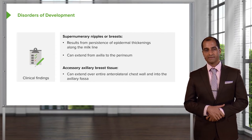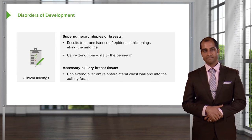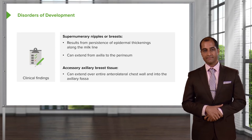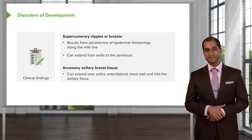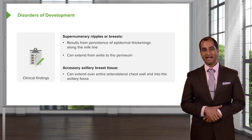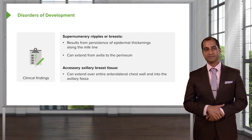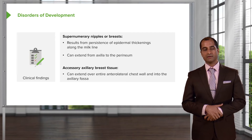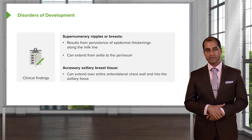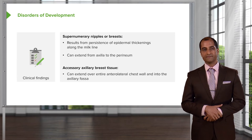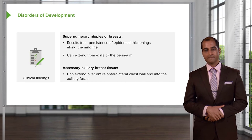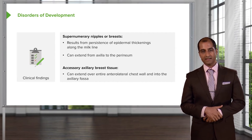We have another important developmental disorder: axillary breast tissue. As the name implies, we have part of the breast which is now extending over the entire anterolateral chest wall and into the axillary fossa. You want to think of this analogously to how the thyroid gland, perhaps ectopically, when trying to develop and migrate from the foramen cecum down to where it nestles in the neck, there might be ectopic remnants as well. Along the same line, we have axillary breast tissue.